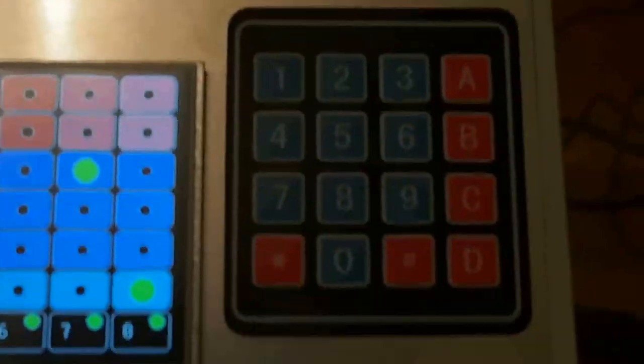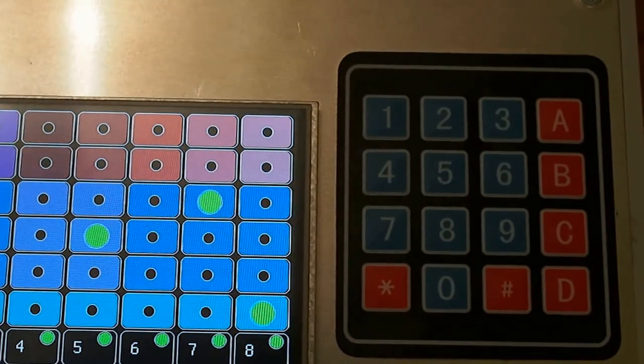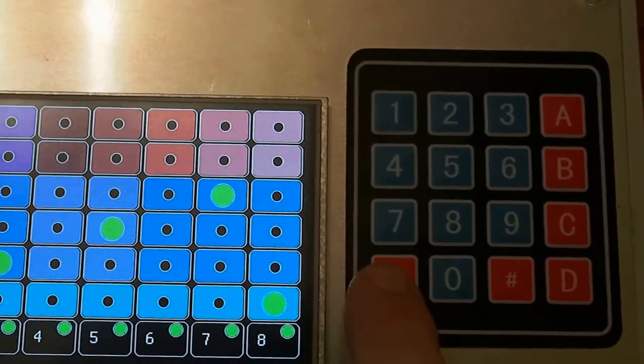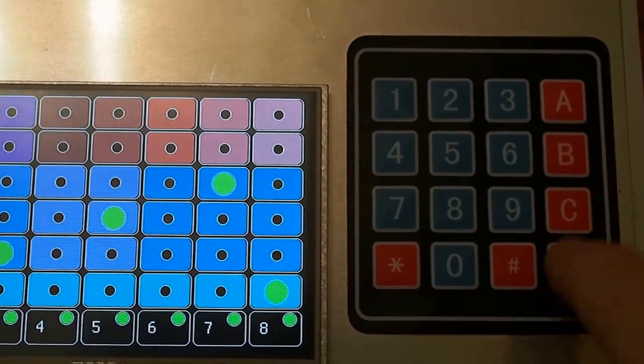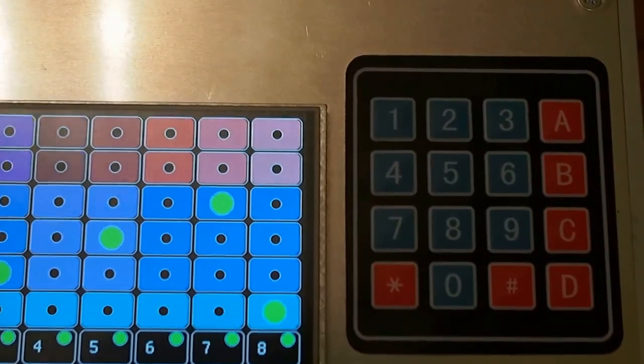Now, let's go over to the keyboard here, and you can see the keyboard scheme is fairly straightforward. Star is for save, pound is for recall. There are four banks, A, B, C, and D, and then the numbers just select which one you want to do.